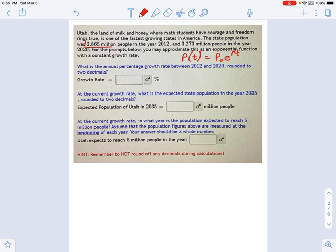It says we got a certain population in the year 2012, right? We have 2.865 million. And then in the year 2020, we have more people. We have 3.273 million. And the first thing it wants to know is what is that growth rate?